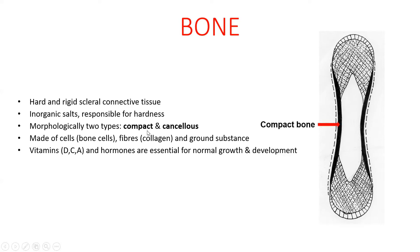Compact bone is a hard shell found on the external aspect of the shaft of long bones and tables of flat bones, whereas cancellous bone is an internal framework of trabeculae separated by marrow space at the ends of long bones. Like ordinary connective tissue, bone is made of cells, fibers, and ground substance.